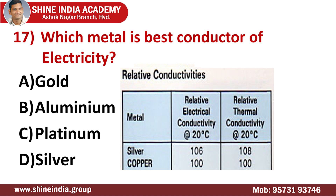Question number seventeen: which metal is the best conductor of electricity? The options are gold, aluminum, platinum, and silver. The right answer is silver. Silver is the best conductor of electricity because it contains a higher number of mobile particles such as electrons. Among the 118 elements of the periodic table, the most conductive metals include silver, copper, gold, aluminum, beryllium, calcium, magnesium, rhodium, sodium, and iridium. The electrical conductivity of silver is the greatest of all metals, greater even than copper. Silver conducts electron current fairly easily. As seen in the picture, the relative electrical conductivity and thermal conductivity are both highest for silver compared to copper.